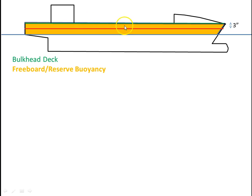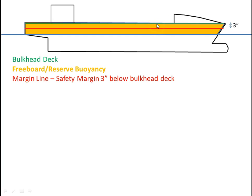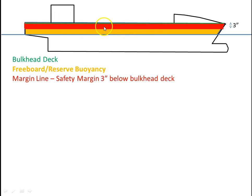This PowerPoint is not to scale — this would probably represent several feet in reality, but for the purposes of this video it represents three inches. That's the margin of safety called the margin line, and what that means is this is a quantity of reserve buoyancy that we should be able to maintain under all conditions as a safety factor.